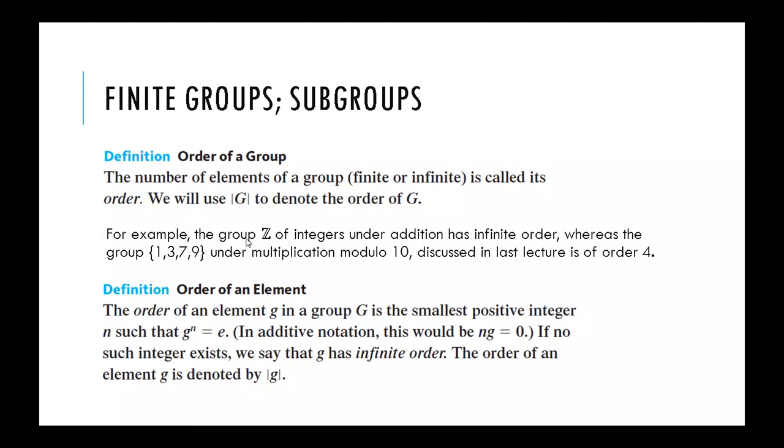For example, the group Z of integers under addition has infinite order, whereas the group {1, 3, 7, 9} under multiplication modulo 10 has finite order. This is the group of positive integers less than 10 which are relatively prime to 10. It consists of 4 elements: 1, 3, 7, 9, so the order of this group is 4.